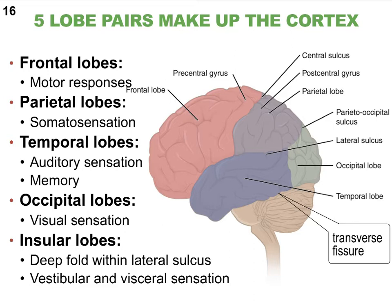Starting with the obvious ones: we have the frontal lobes in red — we see only one because we're looking at the side view. Then we have the temporal lobe, the parietal lobe, and the occipital lobe in green. The beige structure is the cerebellum, and the most inferior structure that continues with the spinal cord is the brain stem.